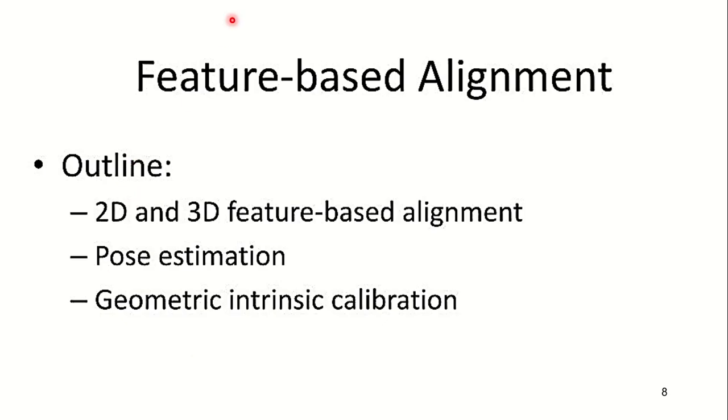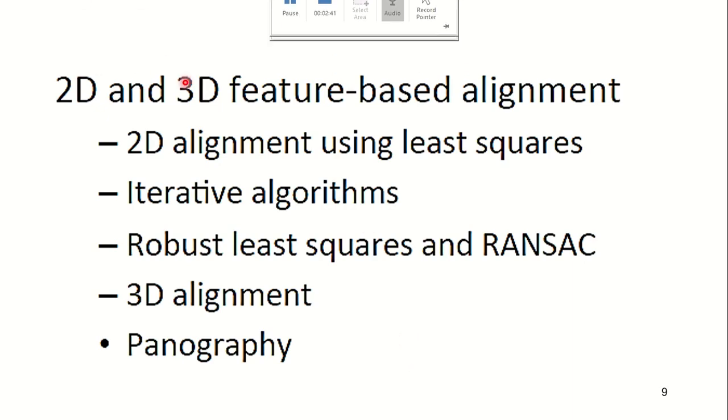Outline of feature based alignment: we are about to discuss 2D and 3D feature based alignment, pose estimation, and geometric intrinsic calibration. In 2D and 3D feature based alignment, we have the topics: different techniques for 2D alignment using least squares, iterative algorithms, robust least squares and RANSAC, 3D alignment, and the application of panoragraphy.